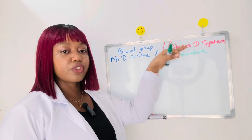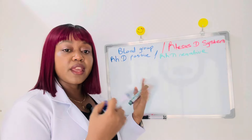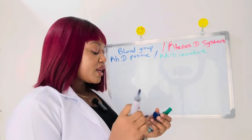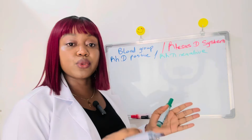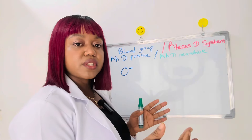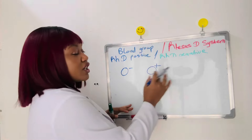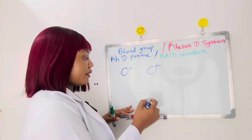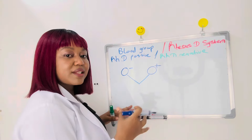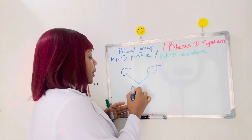I'm going to explain why it's very important to know your Rhesus D factor, especially as a woman. The importance is particularly for ladies who are pregnant. For example, if a mother is Rhesus negative and the father is Rhesus positive, the baby may turn out to be Rhesus positive. When the mother is about to give birth to the first baby, the baby's blood may come into contact with the mother's blood, and the mother's body will begin to build up antibodies against the Rhesus D antigen.